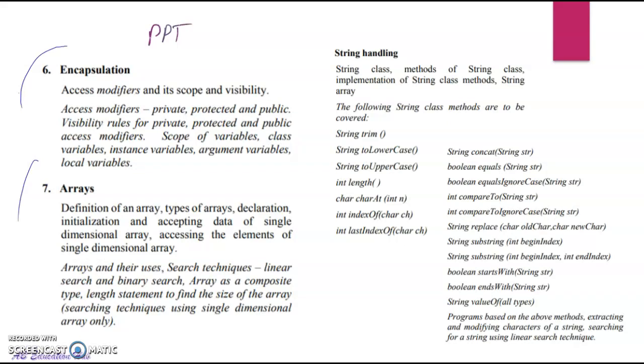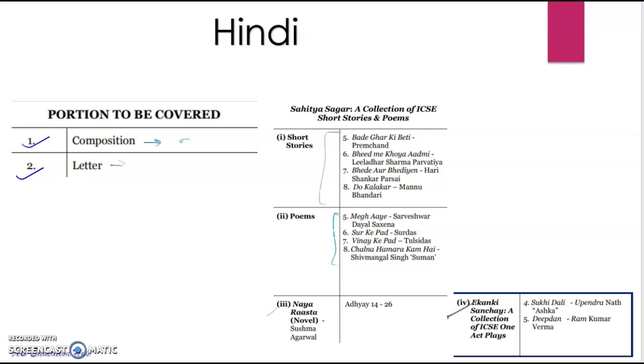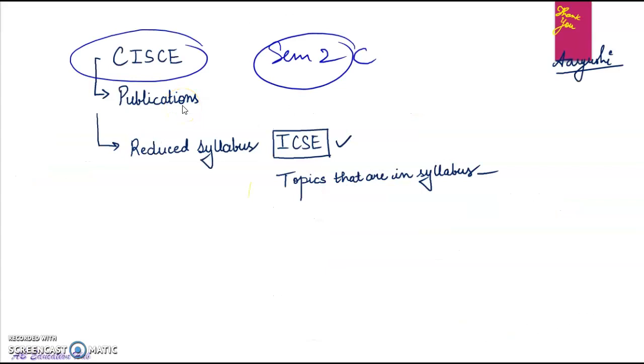I'll be attaching the link of this PPT in my description box so you don't have to copy all this. Now for Hindi you can refer to the playlist and you will get all these chapters. If you have a new book you will have to study this. Again you can refer to the website of CISCE where you can go to publications and you will get reduced syllabus and the bifurcated syllabus also.